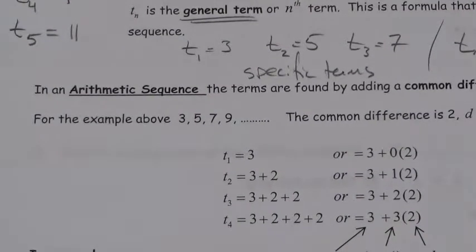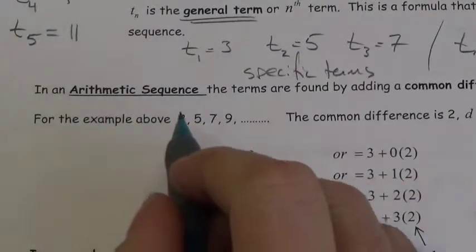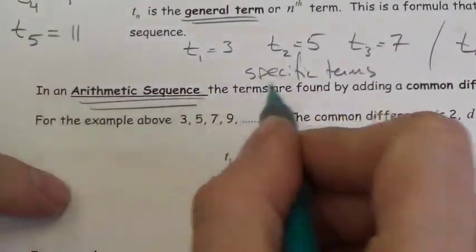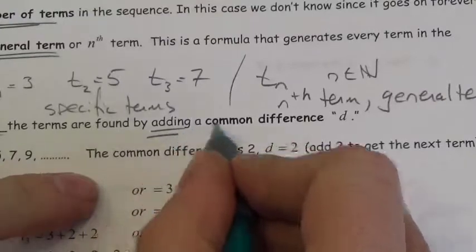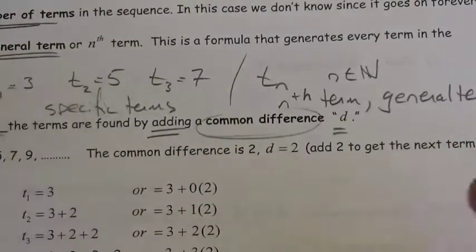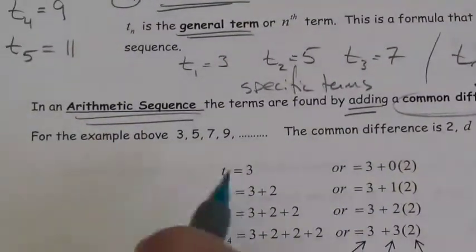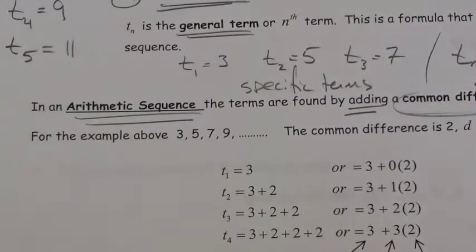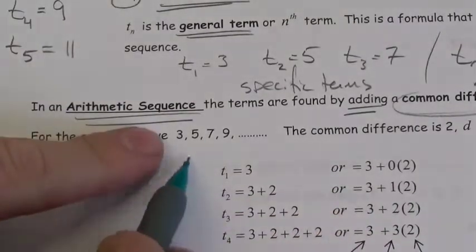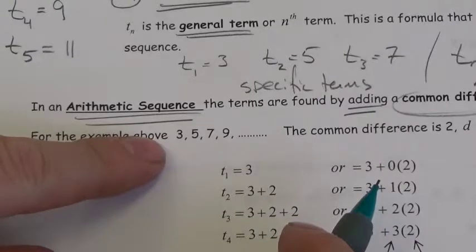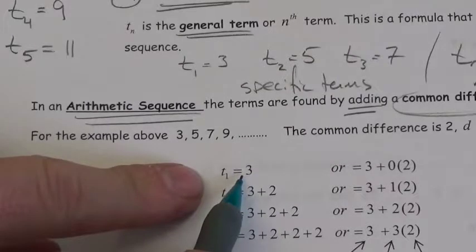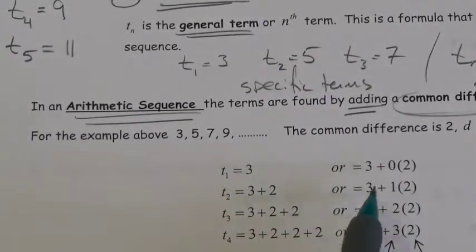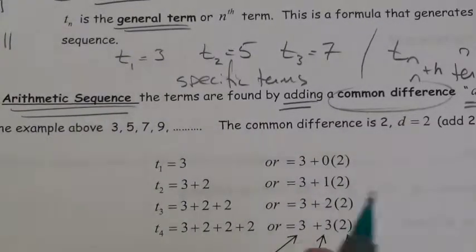Now let's look at the first type of sequence: an arithmetic sequence. To get an arithmetic sequence, we have a certain starting point, and then we add a common difference — we use the letter D to represent that common difference. That sequence 3, 5, 7, 9 is a great example. I started at the number three, so T₁ is three. That is the starting point.